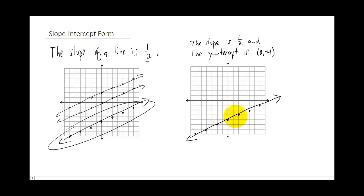So right here is the graph of a line that has a slope of one half, and it has a y-intercept of the point zero, negative four. My question now is, what is the equation of that line?